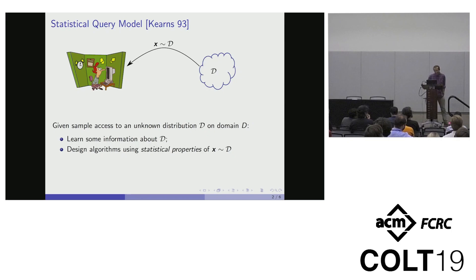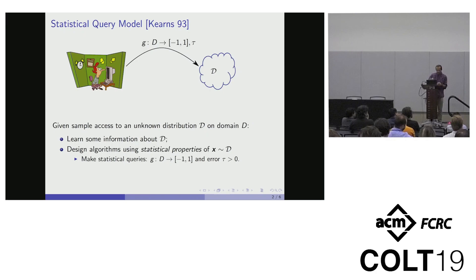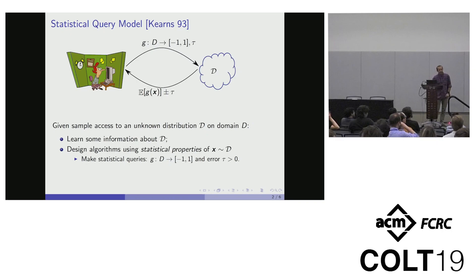This is formalized by saying that rather than the algorithm observing samples, at each point our player gets to make statistical queries. A query is a function G which maps the elements of the domain to [-1, 1], along with an error parameter tau. Upon making this query, what the player observes is an estimate of the function under the unknown distribution. The algorithm proceeds in these rounds, making these queries, receiving answers up to error parameter tau, and finally outputs some answer.